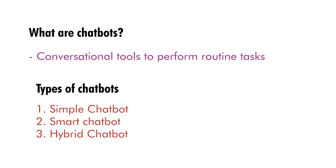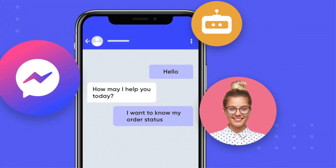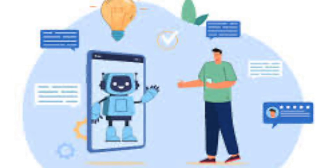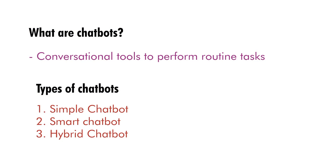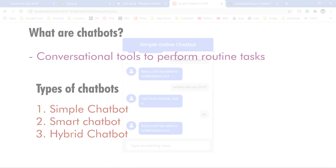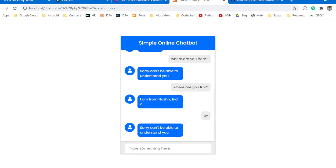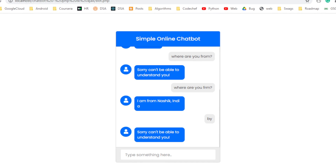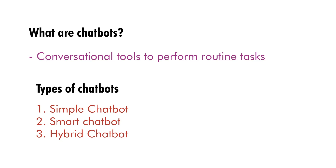There are many different categories of chatbots, but the basic ones are: simple chatbot, smart chatbot, and hybrid chatbot. Simple chatbots have limited capabilities and are usually called rule-based bots. They are task-specific, best suited for straightforward dialogues, and very simple to build and train. For example, ordering a pizza.